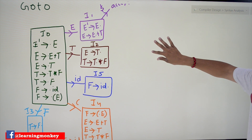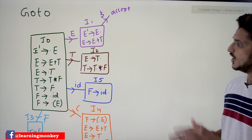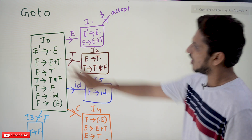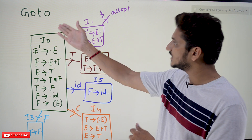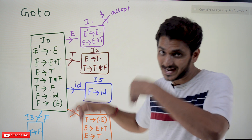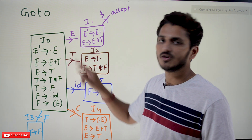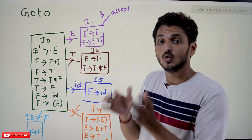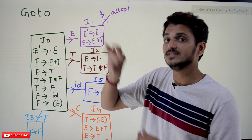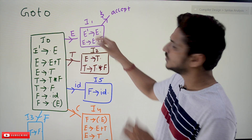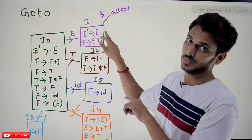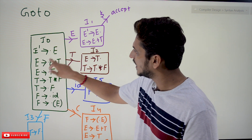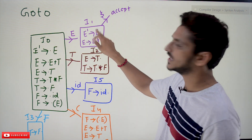Using the closure and goto steps, we construct LR(0) items. Goto means moving one step from a state. The dot represents our current position — moving one step on E means after reading E the dot shifts past E. So from I₀, goto on E gives E' → E• and E → E• + T. These are the productions present in state I₁.